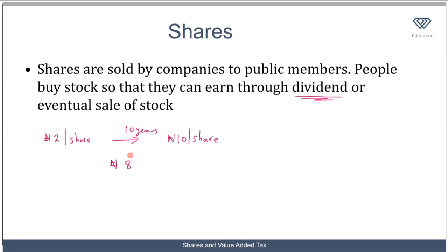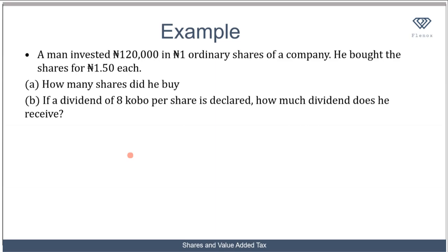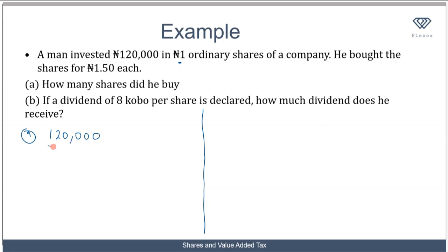Let's see how this plays out in a practical example. A man invested 120,000 naira in one naira ordinary shares of a company. He bought the shares for 1.5 naira each. How many shares did he buy? The value of each share is one naira, but he bought each share for 1.5 naira. The number of shares bought equals the total money invested — 120,000 — divided by the price per share — 1.5.